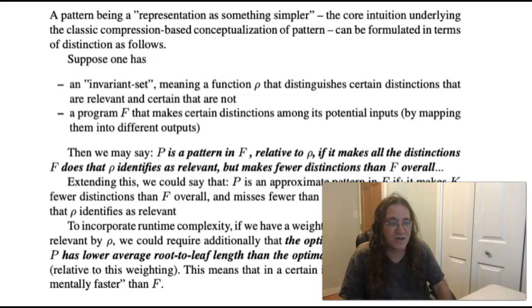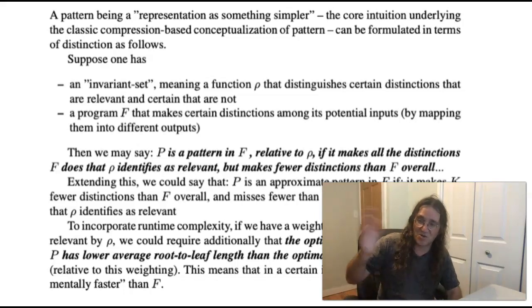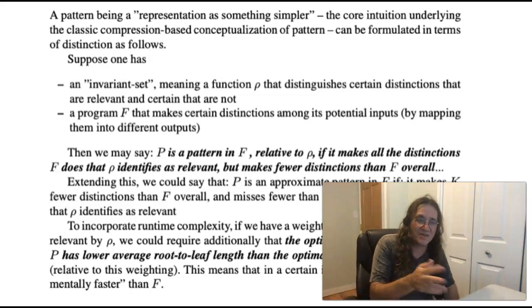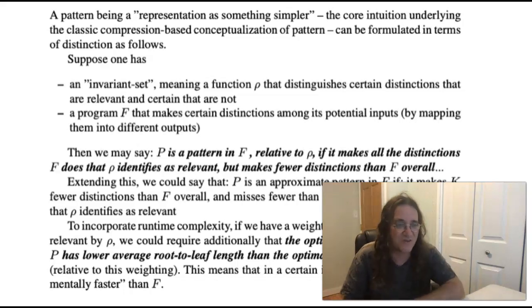You can also extend this into a quantum pattern or a quadrant which I go over in the paper but I'm not gonna talk about here. To look at quantum patterns you look at a distinction as not being either-or probabilistic but you look at a distinction as being weighted by an amplitude, a complex number, and then you can come up with a generalization of this notion.